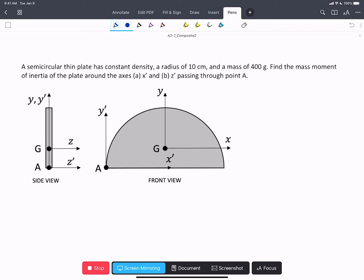In this problem, we have the same semicircular thin plate with constant density that we had in a previous problem. This time, we're asked to find the mass moment of inertia